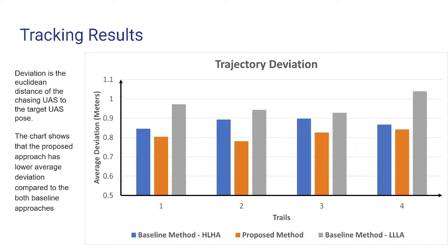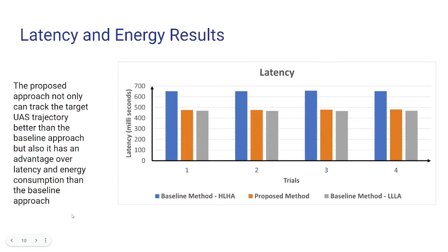Similarly, experiments with real-world data show similar results. Moreover, this strategy not only helps track the target well, it also yields lower latency and energy consumption as a byproduct. You can see the overall latency by the convolutional neural network: HLHA has high latency, and the low-latency, low-accuracy network has less latency, as expected. The proposed approach achieves latency almost on par with the low-latency, low-accuracy network, yet yielding better tracking.